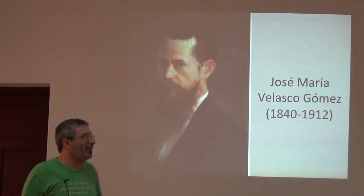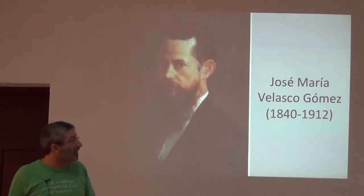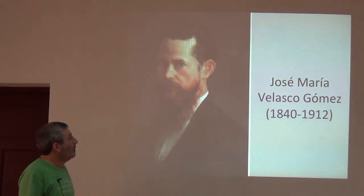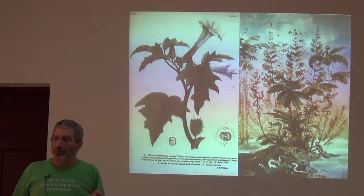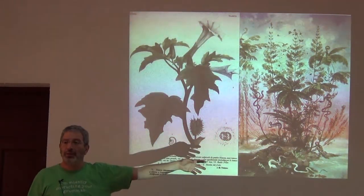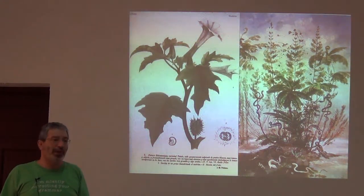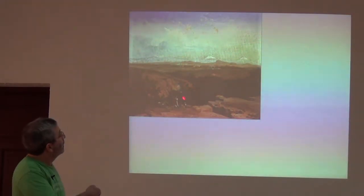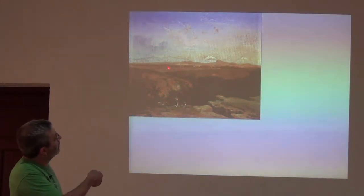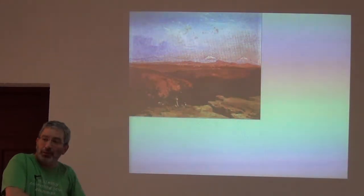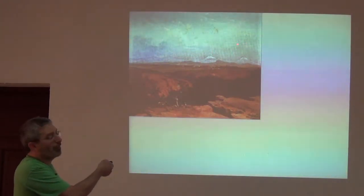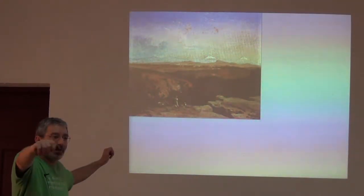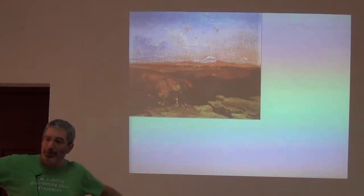We're going to talk about landscape art, not biology, just for a minute. This is Jose Maria Velasco Gomez, who lived through the second half of the 19th century. Velasco is very famous for two things: he was the scientific illustrator for the Mexican National Museum of Natural History, and for these landscape paintings. This is a view across Mexico City — the city is here, you're up on the west wall, and notice here in the background are those two volcanoes. Ixtaxihuatl is always broader and longer, and Popocatepetl is more like a cone.